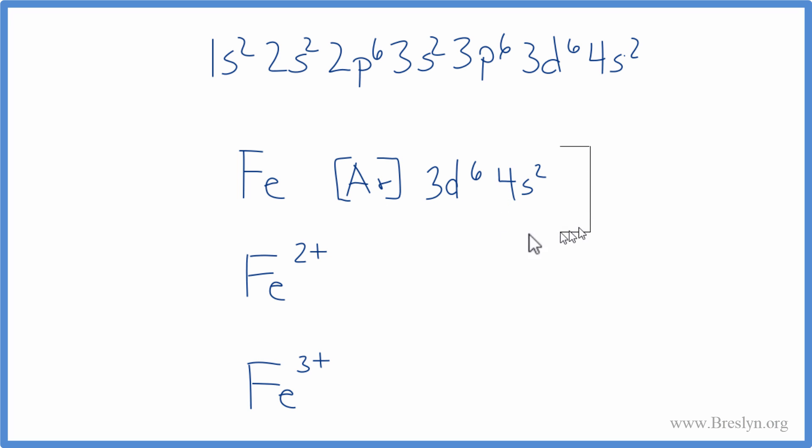We'll take this notation here. And because it's a 2 plus, that means it's lost two electrons. Electrons are negative. When you lose electrons, you become more positive. So iron loses two electrons, and we'll get rid of this 4s² here. And that's the electron configuration for Fe²⁺.